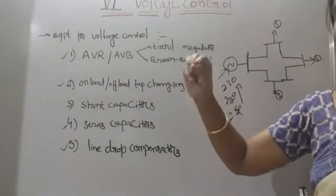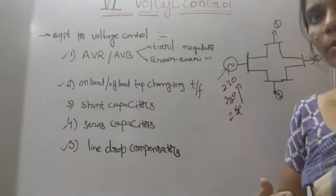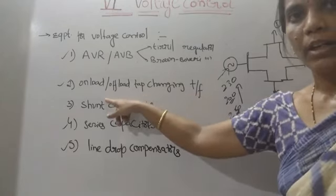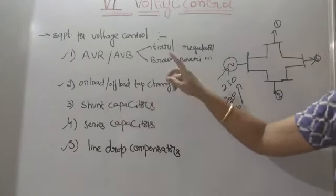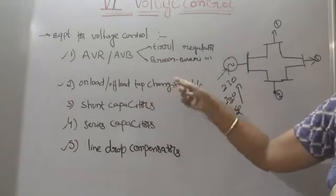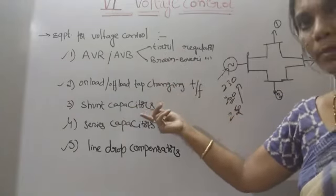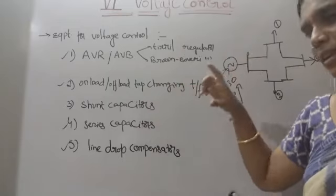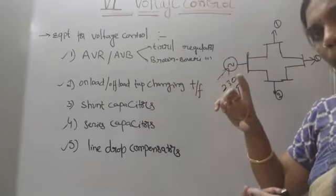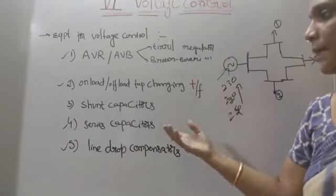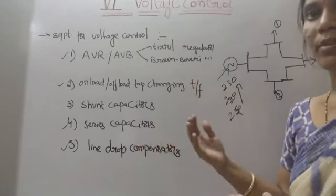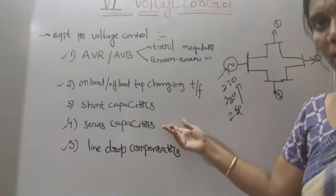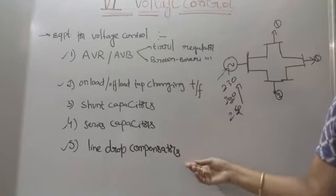If we have tapping positions, the number of turns increases. On-load and off-load tap changing - the transformer has load and we will maintain voltage. We will use the shunt capacitor to improve the power factor. Series capacitors will help develop the voltage profile. Next are line drop compensators.